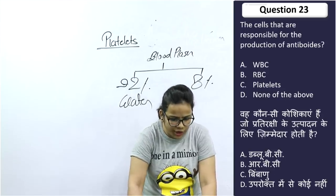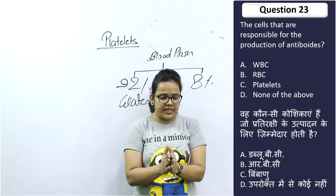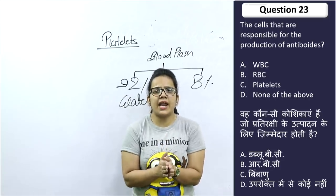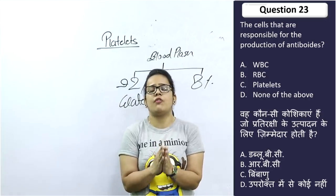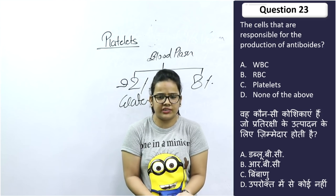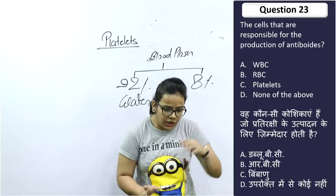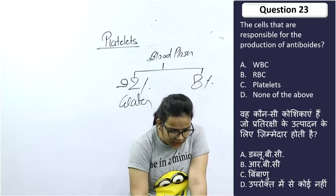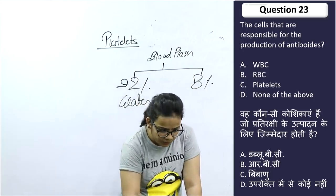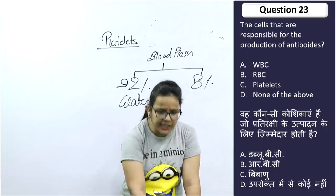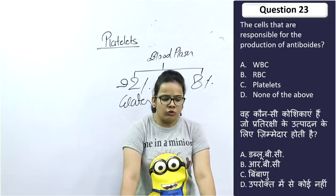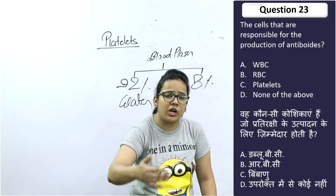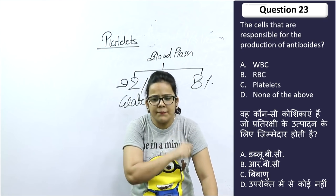The 23rd question: The cells responsible for the production of antibodies — which cells produce antibodies? The answer is WBC — white blood cells. WBC forms your antibodies, and those antibodies protect the body from bacteria and infection.